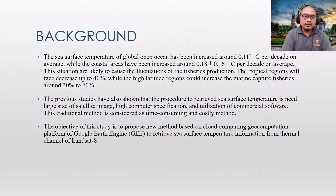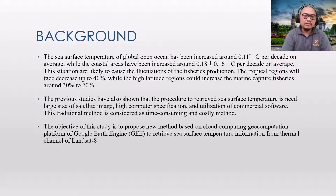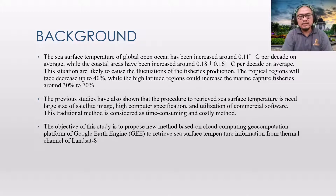Let's go to the background of this study. The sea surface temperature of the global open ocean has increased around 0.11 degrees Celsius per decade on average, while coastal areas have increased around 0.18 ± 0.16 degrees Celsius per decade on average. This situation is likely to cause fluctuation of fish production. The tropical region will face a decrease of up to 40 percent.